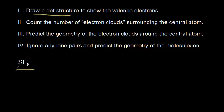Sulfur is in group 6 on the periodic table, so 6 valence electrons. Fluorine is in group 7, so 7 valence electrons, and I have 6 of them. So 7 times 6 gives me 42, and 42 plus 6 gives me 48 valence electrons that we need to show in our dot structure.